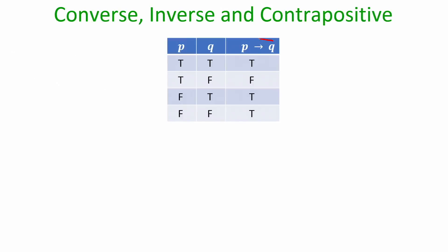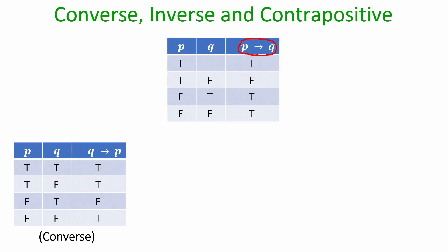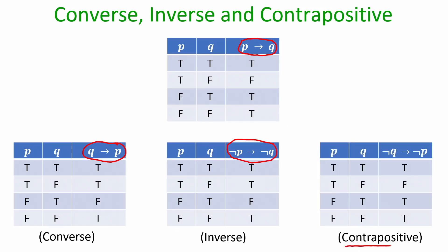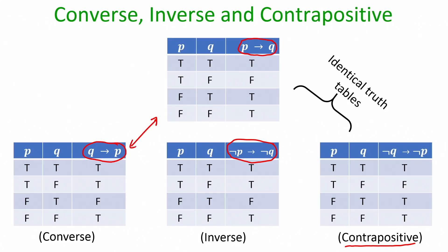Remember, if P then Q is represented by P implies Q, and the truth table of P implies Q is given. The converse of P implies Q is denoted by Q implies P, and the truth table of the converse is shown. The inverse of P implies Q is denoted by negation P implies negation Q. The contrapositive, which is very important, is the statement negation Q implies negation P. The truth tables of the converse and P implies Q are not the same.